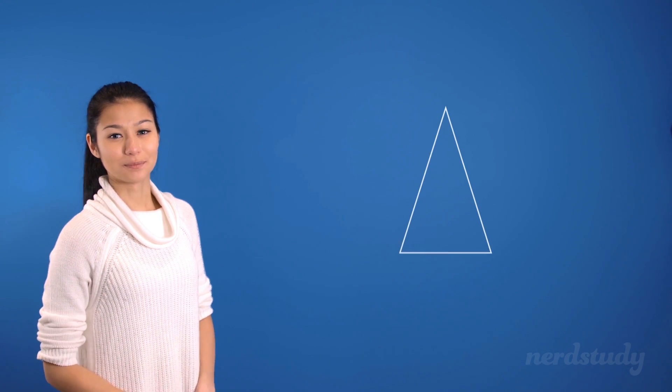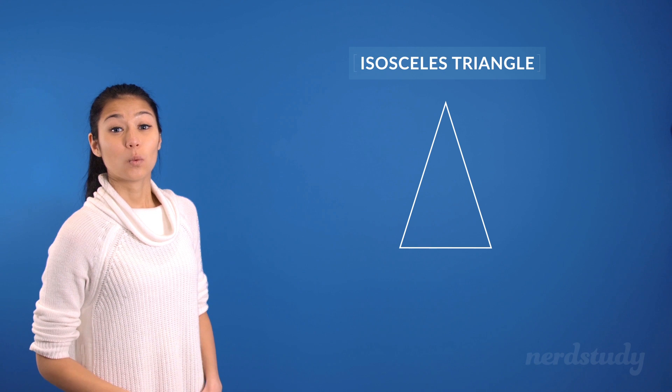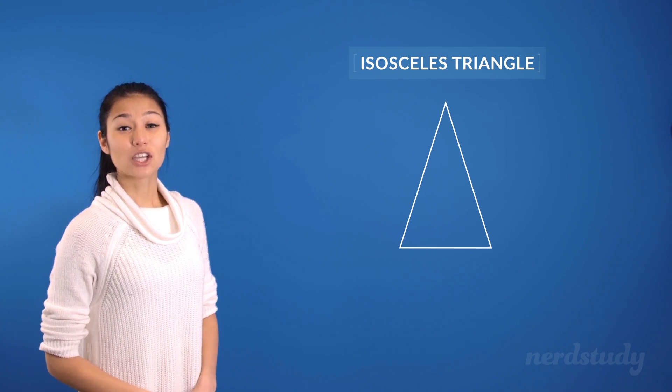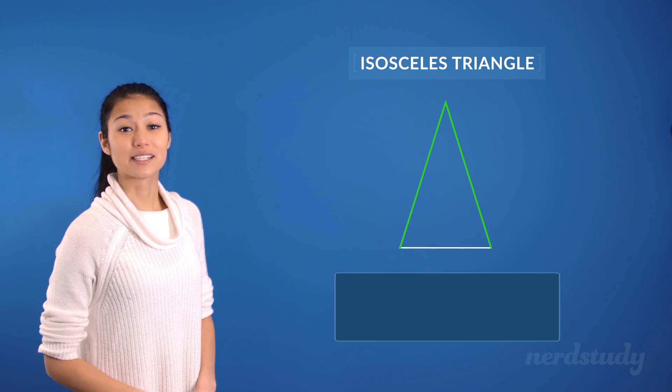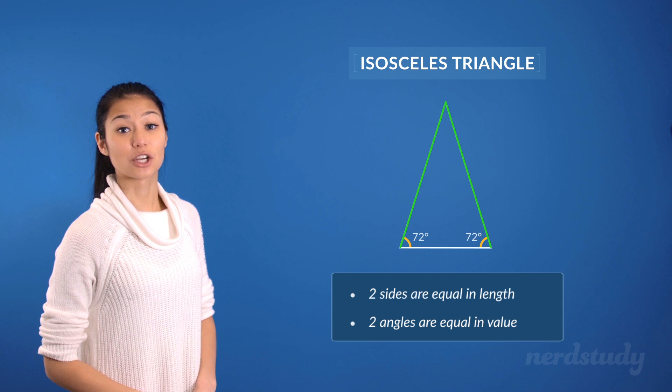Let's move on to the next triangle. This is an isosceles triangle. Whereas the scalene triangle has three different side lengths and angles, the isosceles has two sides that are the same in length, which means that it makes two of the opposite angles equal to each other as well.